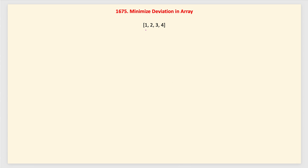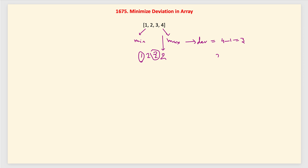Let us understand this with an example. We have minimum value 1 and maximum value 4. If we do not use any operation, the deviation is 4 minus 1 which is 3. But 4 is even, so we apply operation 1 and divide by 2. It becomes 2, so our array is now [1, 2, 3, 2]. The next maximum value is 3, and minimum is 1, so the deviation is 3 minus 1 which is 2, which is smaller than the previous 3.